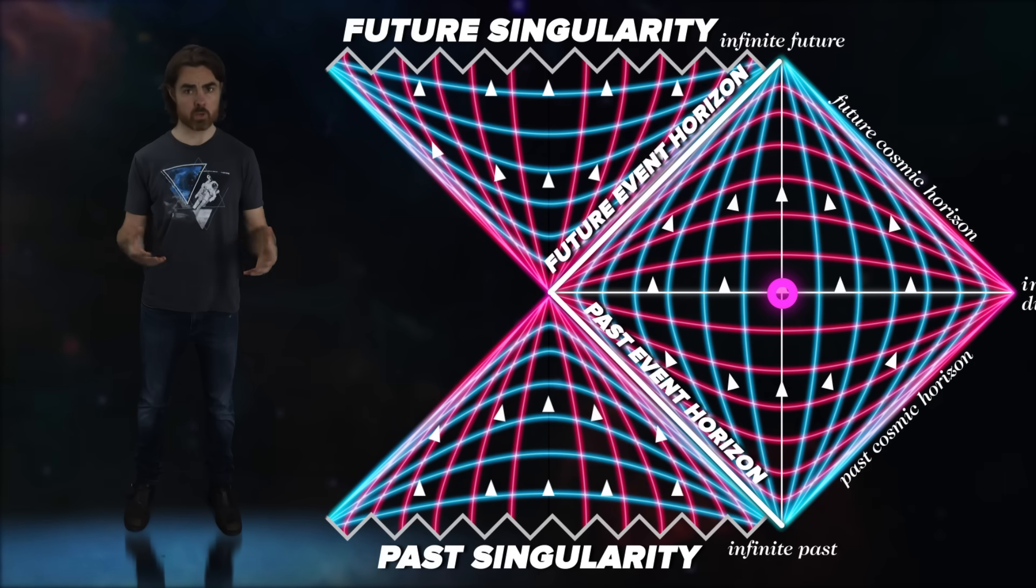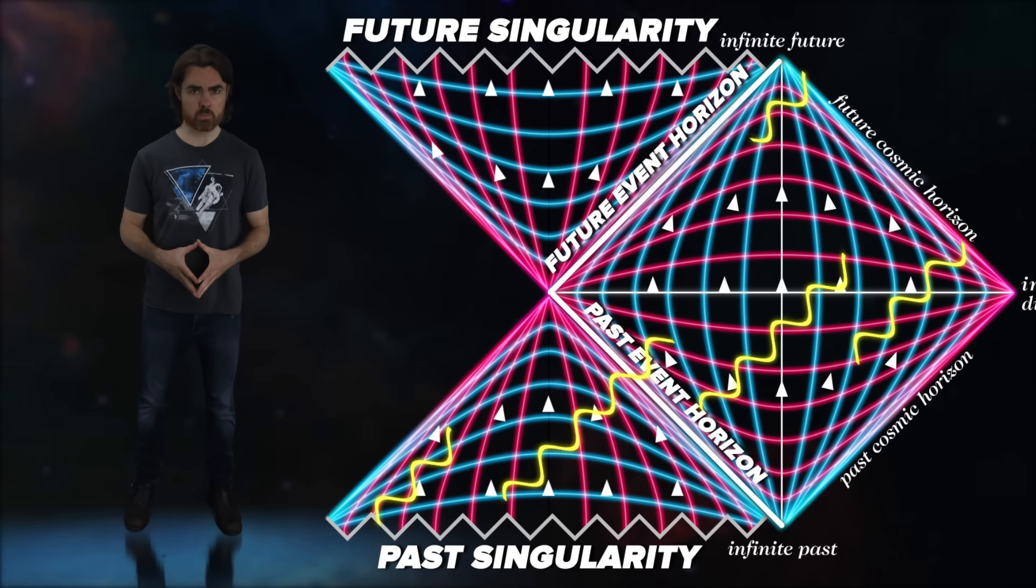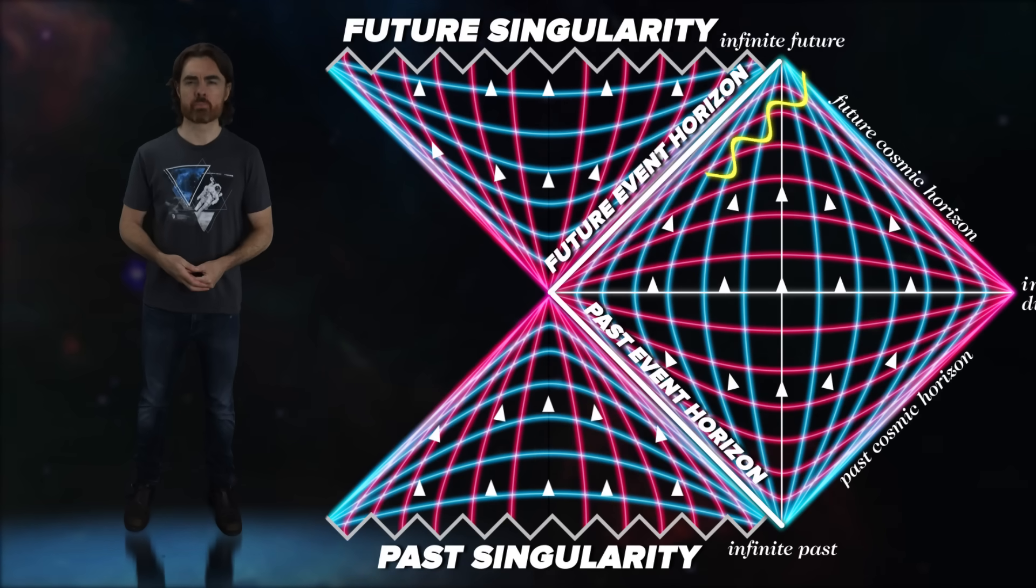So, the past region of the eternal black hole has an event horizon that's a barrier to entry. But also, light rays within that region must move up on the diagram. That suggests they must exit into the outside universe. Anything inside the past eternal black hole must be ejected. So far, this region fits perfectly the description of a white hole. The eternal black hole of the past technically is a white hole.